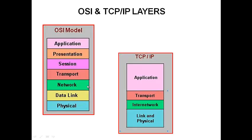Going up we have the network layer, which describes the Internet Protocol address — where we are going (destination) or where we are coming from (source). It talks about the IP addresses of devices or network nodes we are about to reach, or your own device itself.